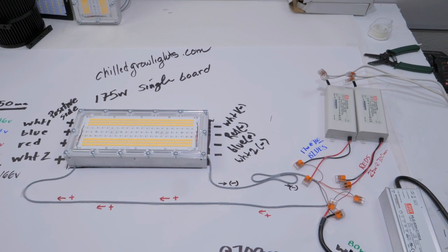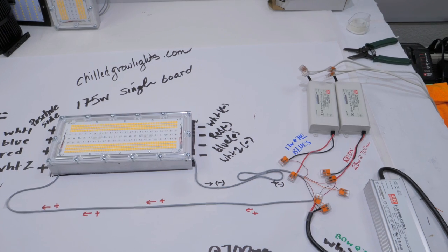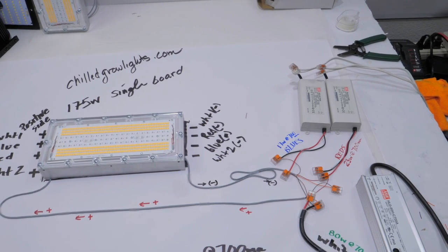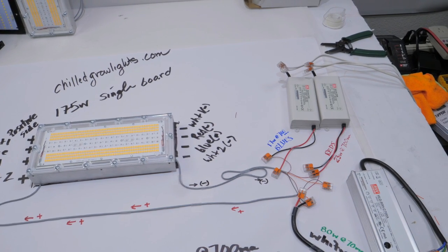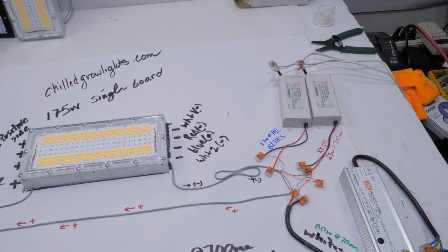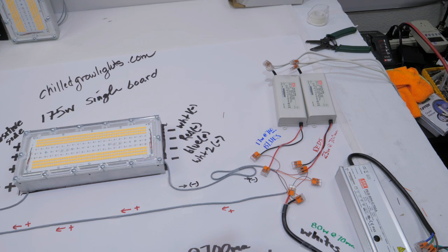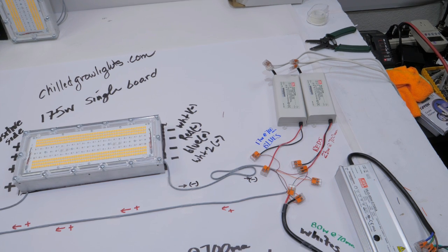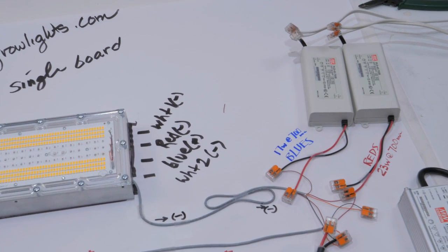I have these little PLD Meanwell drivers set up to each of the blue and the red channels. The voltage on these drivers is like 50-some odd volts, so it has no problem running both channels. Then the larger driver I'm running both white channels in series together, so I have a single positive and a single negative.